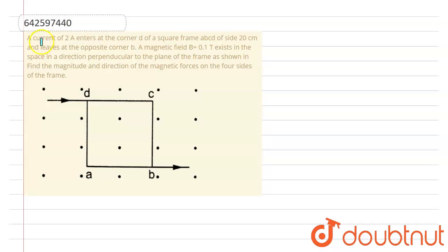In this problem we have a current of 2 ampere entering at corner D of a square frame ABCD of side 20 cm and leaving at the opposite corner B. The magnetic field of 0.1 tesla exists in a space in a direction perpendicular to the frame. Find the magnitude and direction of magnetic force on the four sides of the frame.